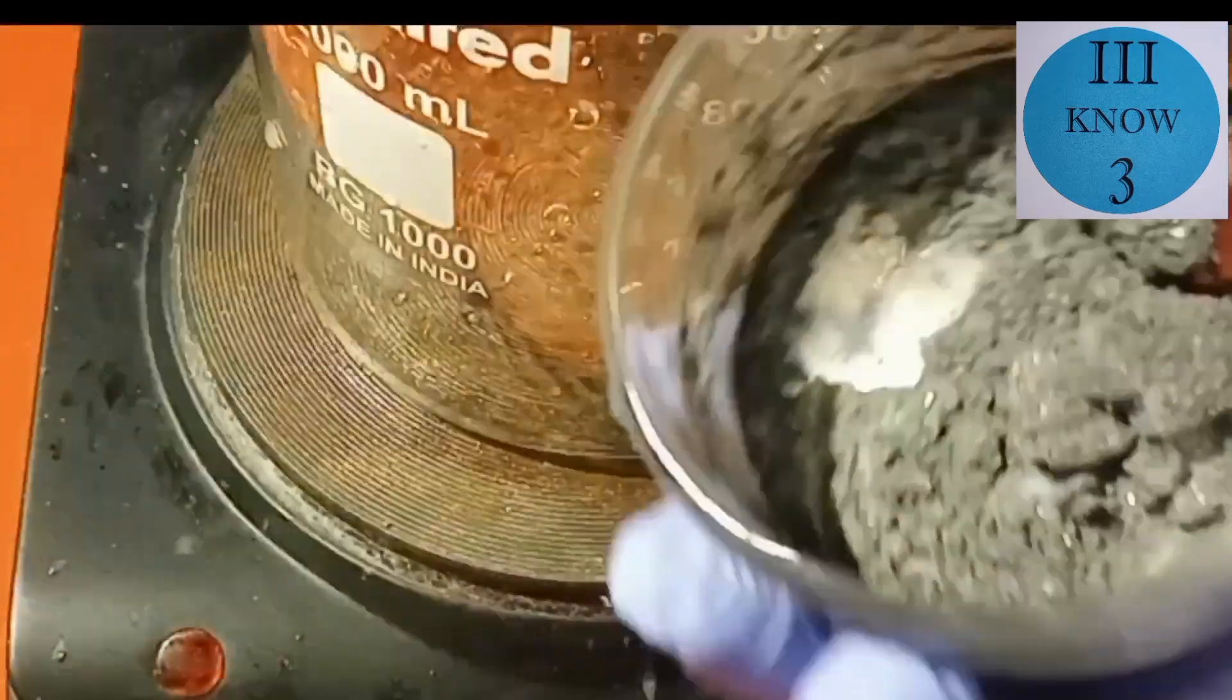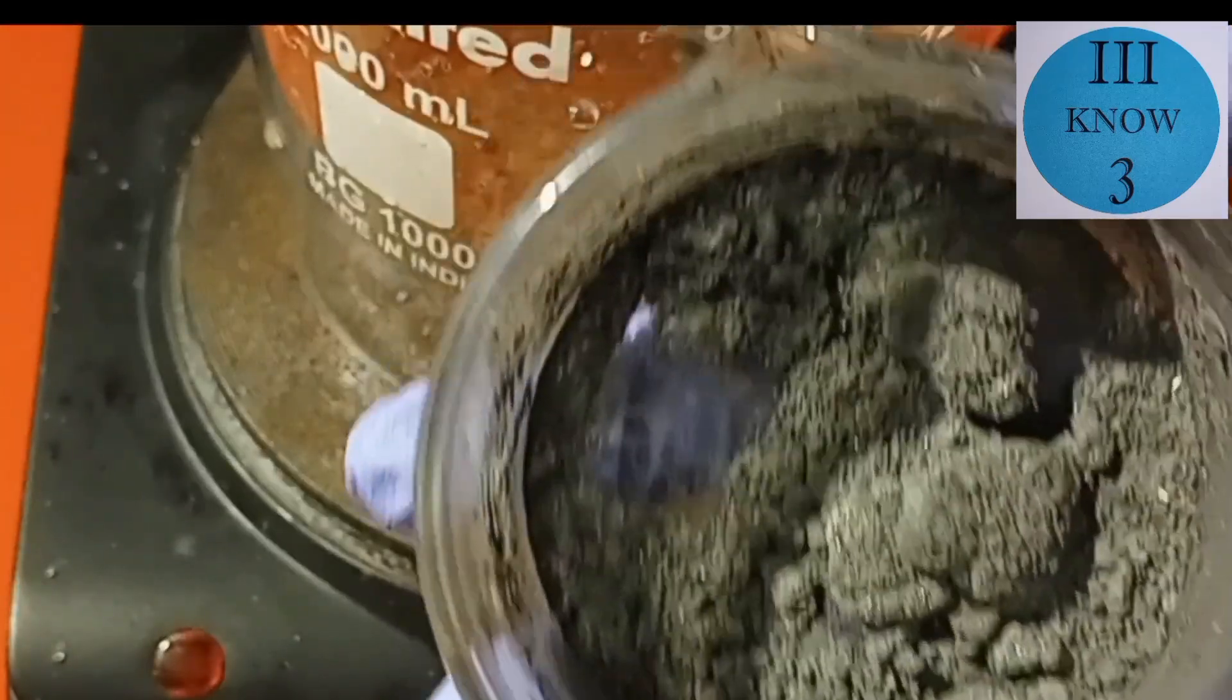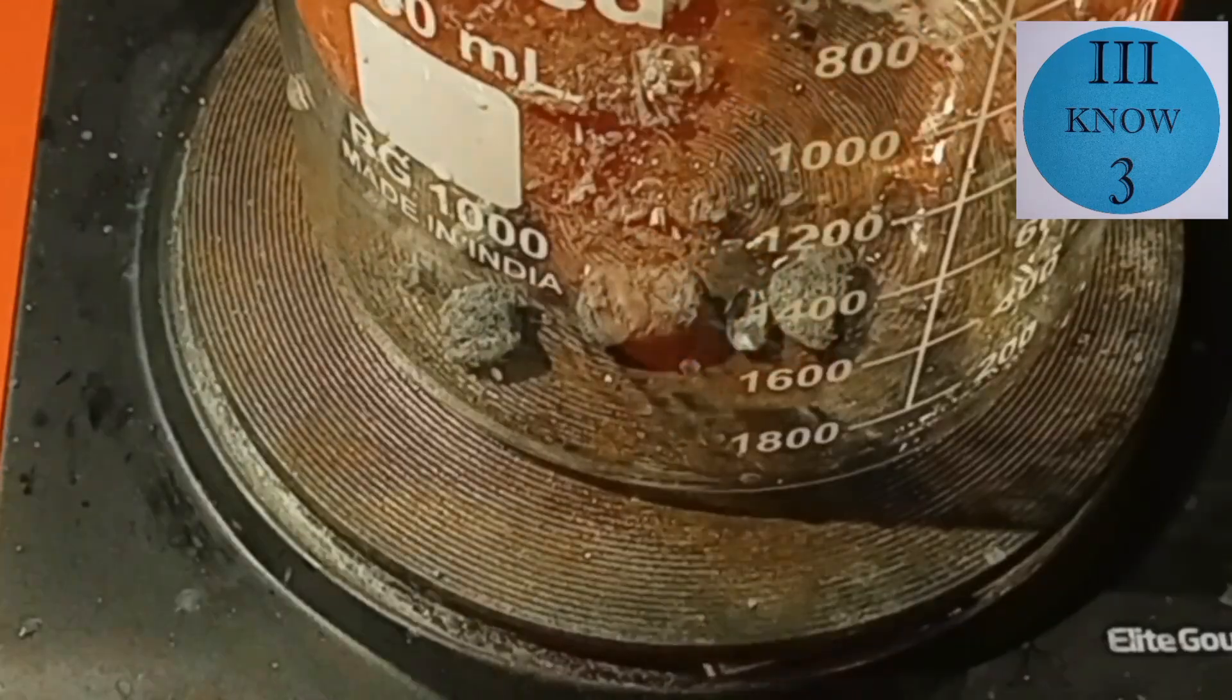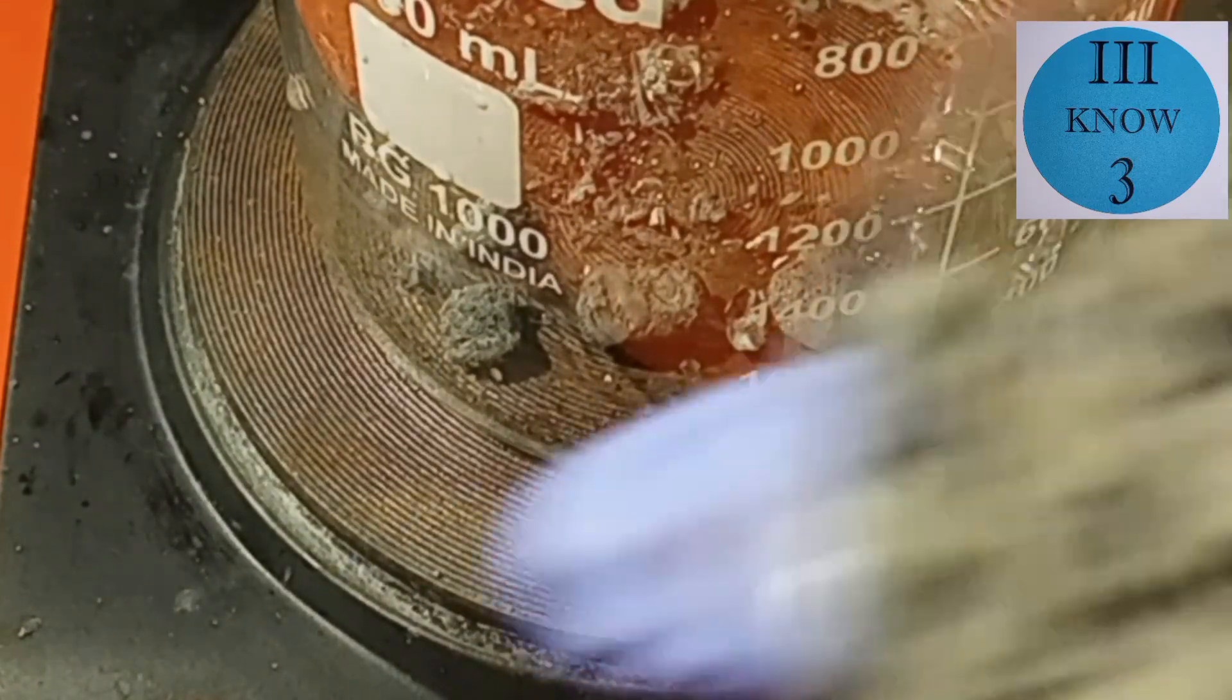This is tin metal that was deposited on the cathode in our tin metal acid and electricity video. And here's a little bit more.